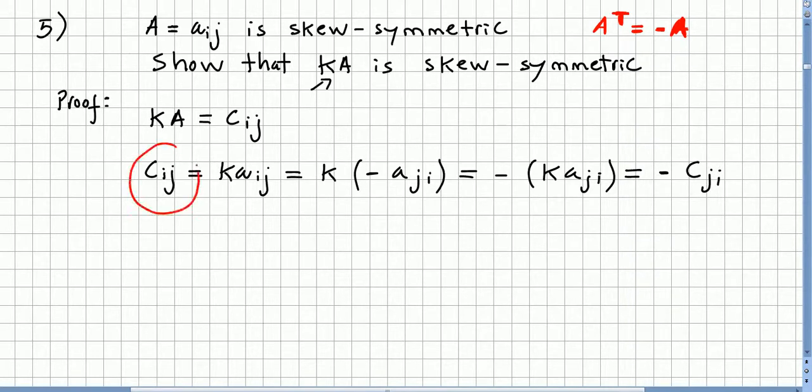So Cij equals minus Cji. So kA is also skew-symmetric, and that concludes the proof.